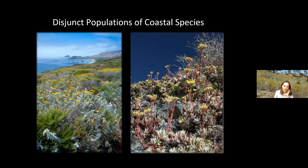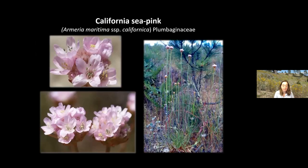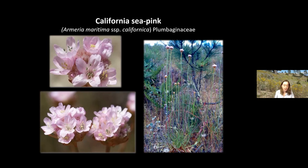These coastal disjuncts kind of make sense — they think they're at the beach; it's a sandy soil that happens to be four to eight miles further inland than normal. For species like California sea pink, Armeria maritima in the Plumbaginaceae, this is a herbaceous plant primarily found right along the coast where inflorescences are maybe eight to ten inches tall. In the Sandhills, they grow to be about two feet tall — maybe because they aren't as affected by the wind, or maybe because, as they've been separated from coastal populations over time, they might also be evolving.